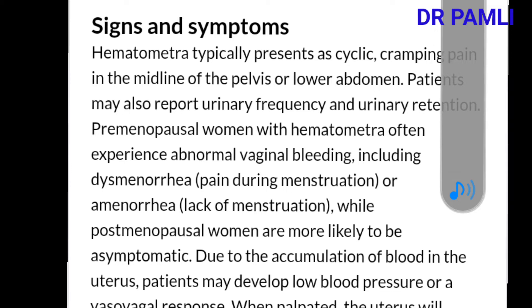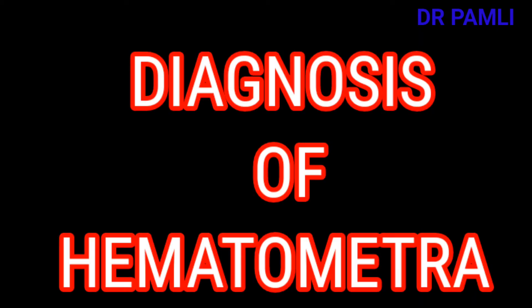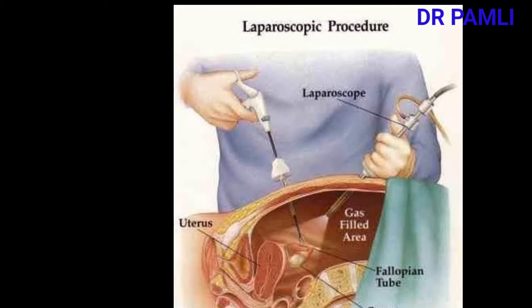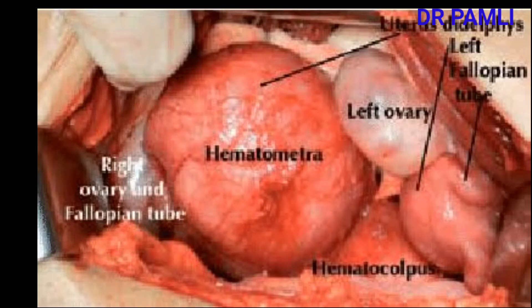This condition mostly affects young females or older females in their premenopausal period. Diagnosis of hematometra is straightforward — we normally send the patient for obstetric ultrasound, which depicts blood pooled in the uterus. We can also perform laparoscopy, using a camera to visualize the female reproductive organs and confirm the presence of blood filled in the uterus.